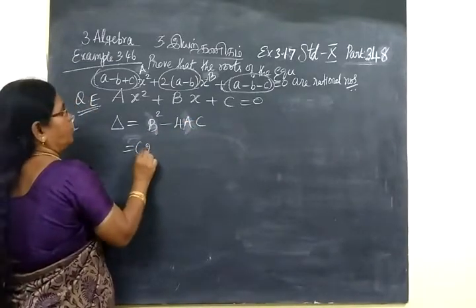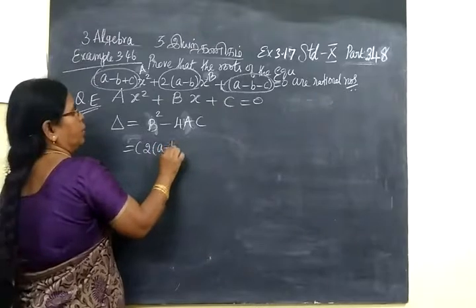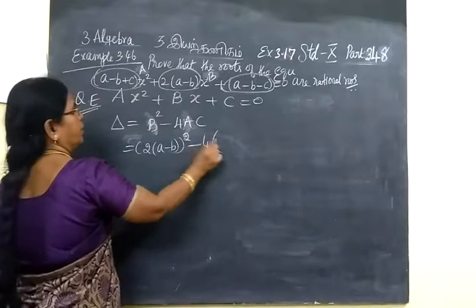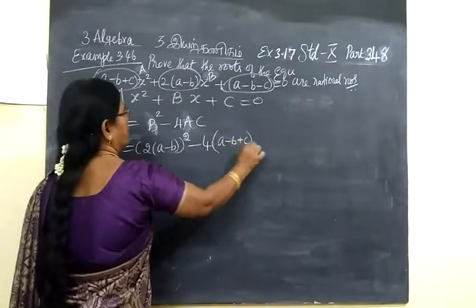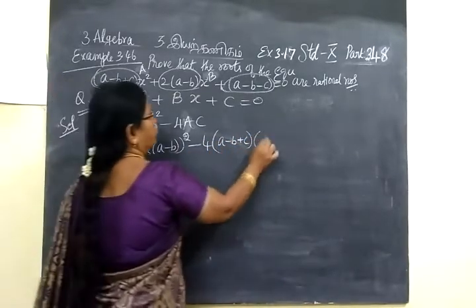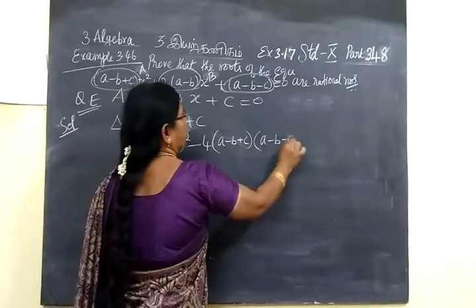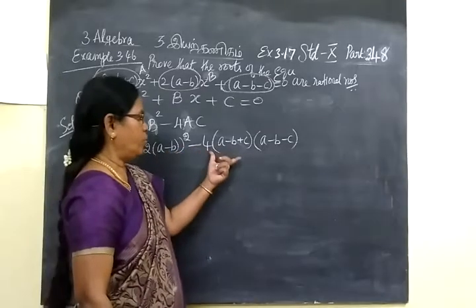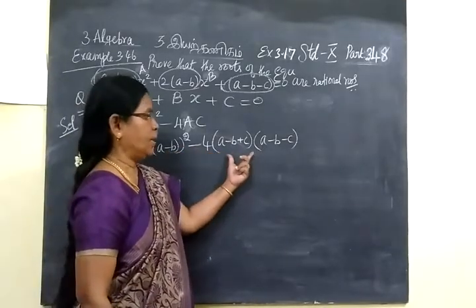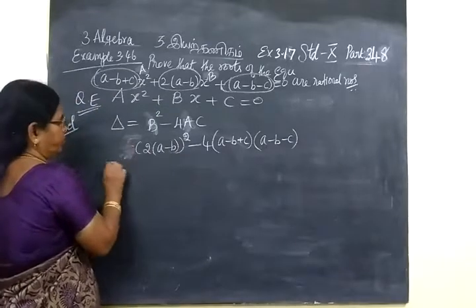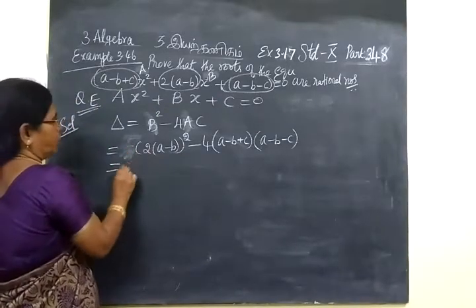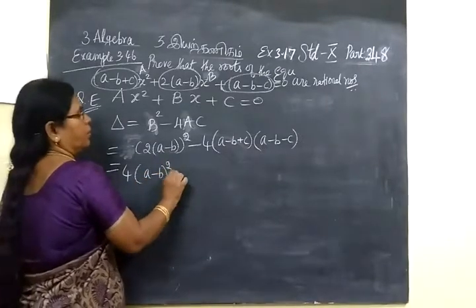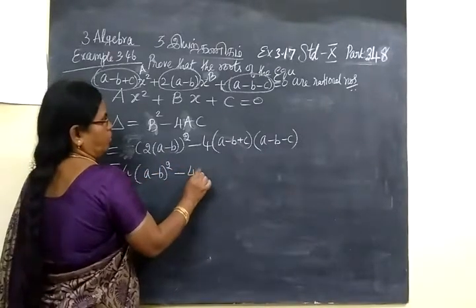B value: 2 bracket A minus B, whole square, minus 4 bracket A equals A minus B plus C. Then C equals A minus B minus C. So B square minus 4B square C, equal to A minus C. So equal to A minus C whole square minus 4 bracket.